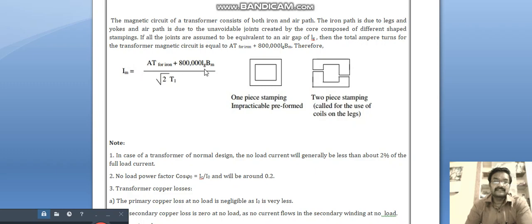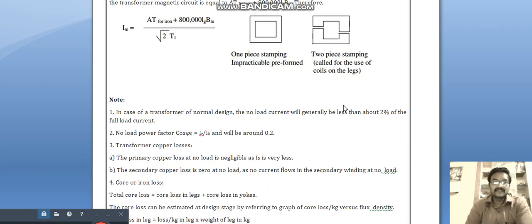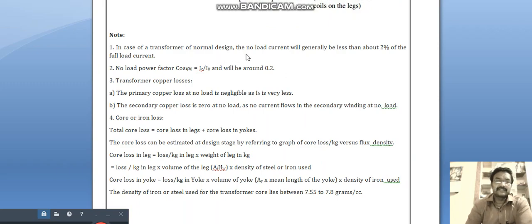One piece stamping impacts pixels. Preformed two-piece stamping called for use of coils on the legs. In case of transformer normal design, the no-load current will generally be less than two percent because we know transformer is the most efficient electrical equipment.